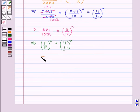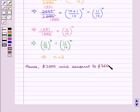Which implies n is equal to 3. Hence $2000 will amount to $2662 in 3 years. Which is our answer.